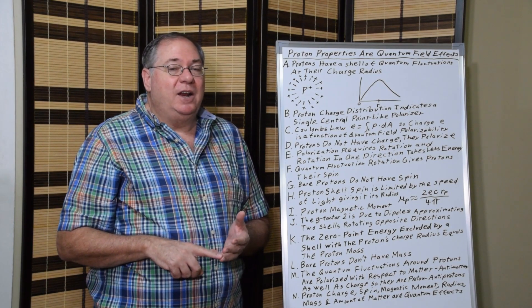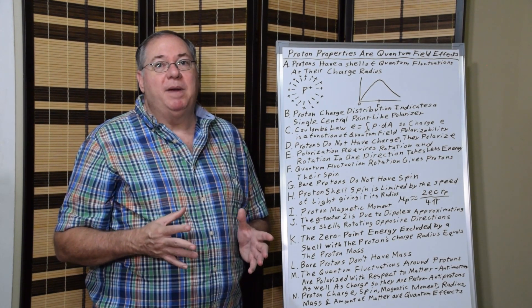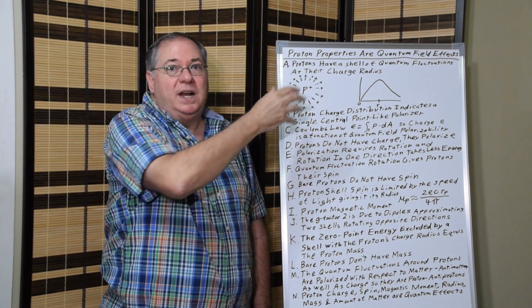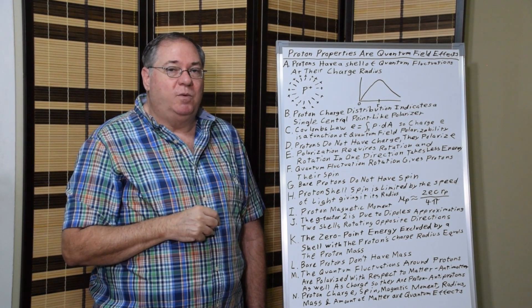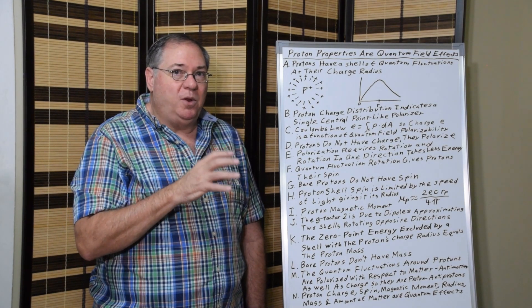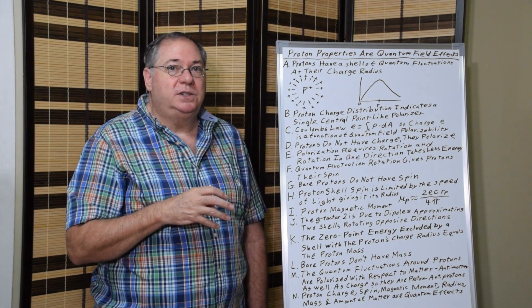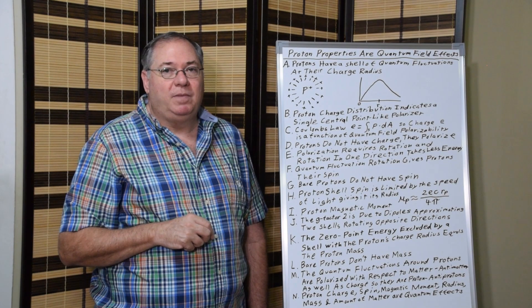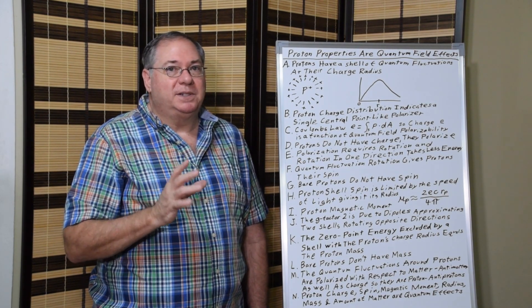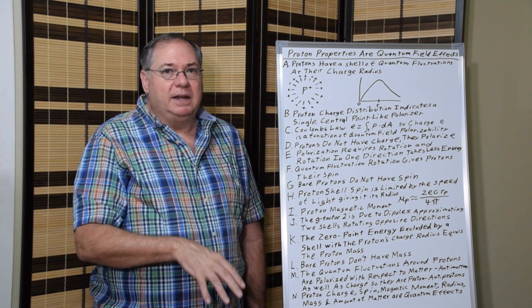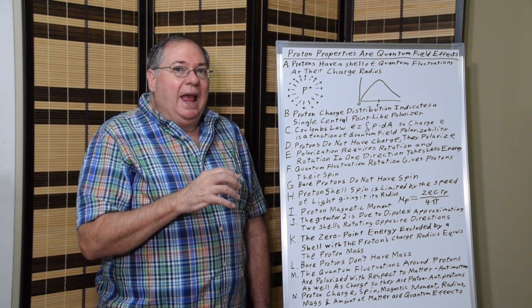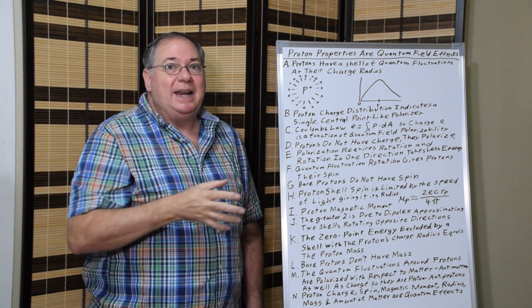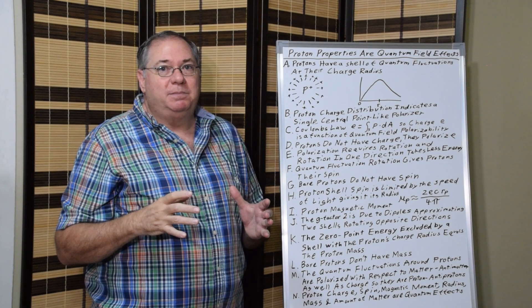And then lastly, it also explains the matter-antimatter property. Because these dipoles are proton-antiproton dipoles that form. Because not only do they end up being polarized with respect to the electric charge, they're also polarized with respect to matter-antimatter orientation. And this is something I discuss in other papers. I'll have to go into detail. I'll link a couple below.